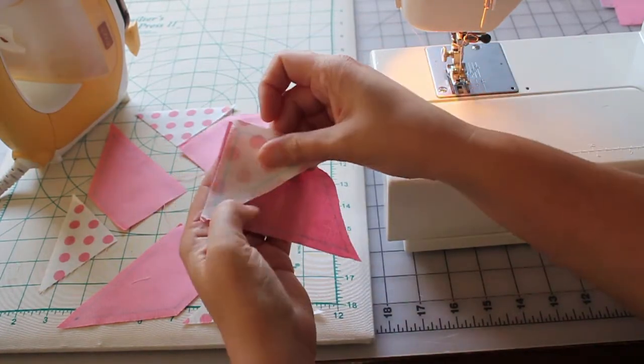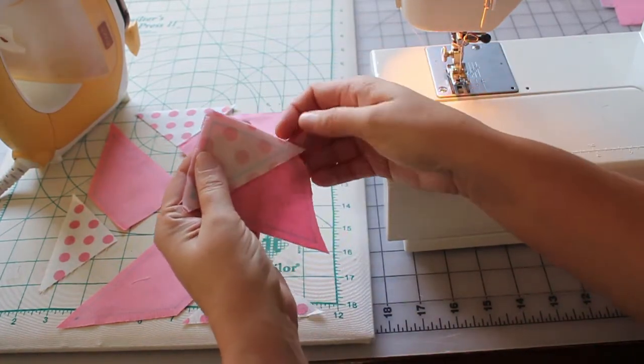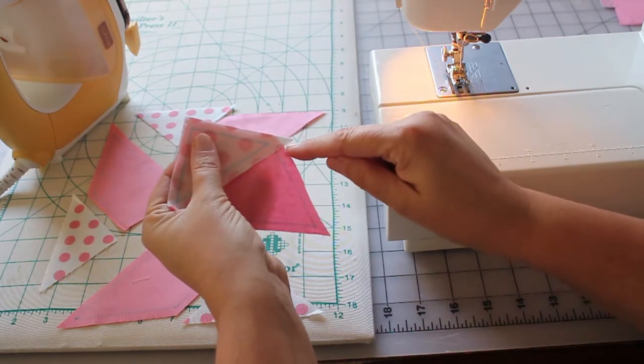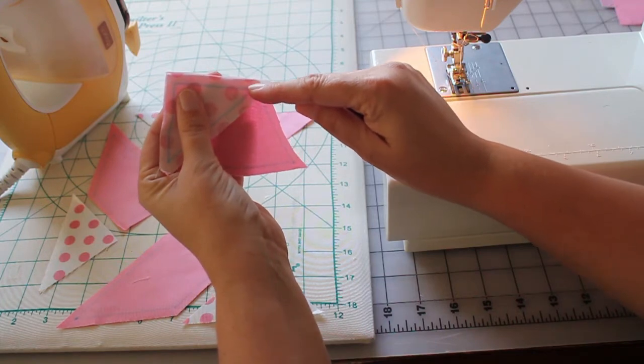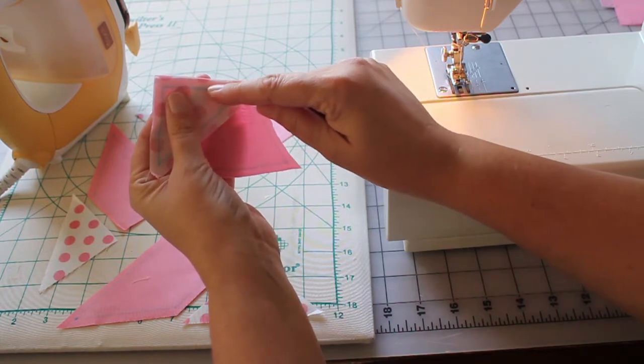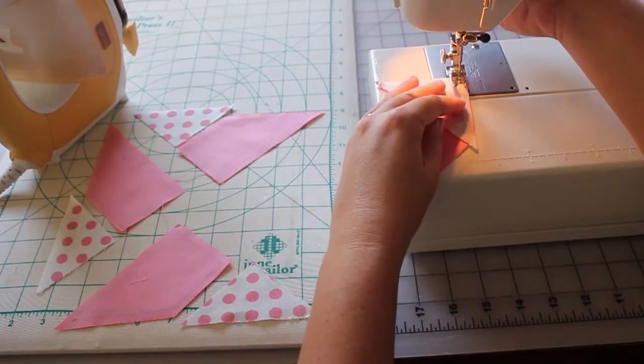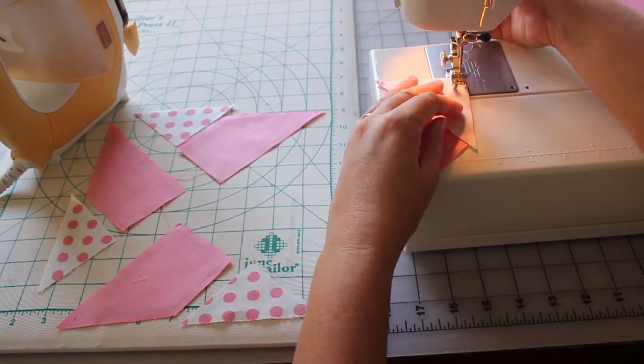Let's start by putting these triangle pieces together. Line them up like this. You'll notice you have a piece sticking out and through the light there you can see that this piece sticking out actually lines up perfectly with our line right here. We're gonna bring it to the sewing machine and stitch.